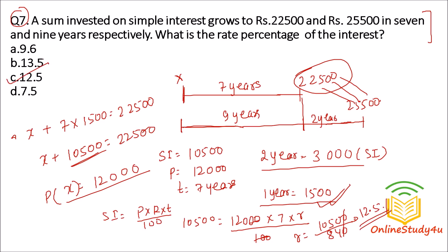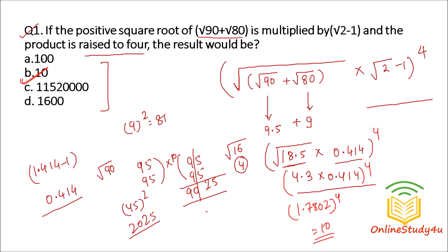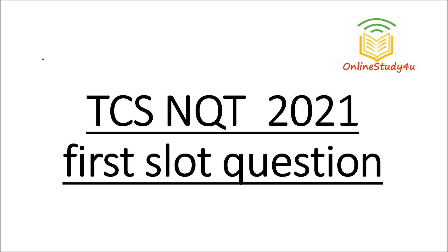So friends, we have solved 7 questions that were reported by students from the TCS NQT 2021 first slot examination. As soon as we get other aptitude, reasoning, and coding questions, we will try to solve all of them. Please like, share, and subscribe with your friends so that they can utilize this as much as possible. Thank you!